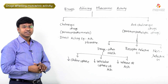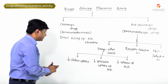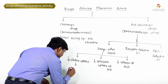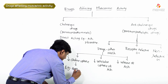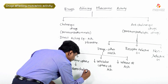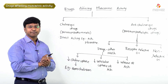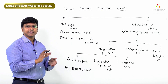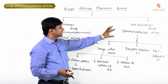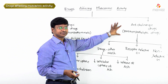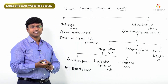The drug that decreases choline uptake is hemicholinium. Hemicholinium prevents choline uptake into the parasympathetic nerve, thereby reducing acetylcholine synthesis and producing a parasympatholytic action.